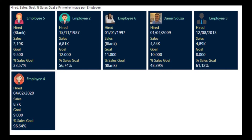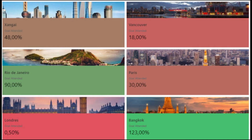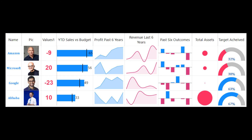Now we move on to two new custom visuals that I'm really excited to use. The first is the multi-info card — it looks like the multi-row card default visual in Power BI, but better, with tons of customization features. The second is multiple sparklines, which allows you to add sparkline charts inside your table cells. This custom visual is great if you want to show more insights in your Power BI report pages while keeping the number of visuals small.